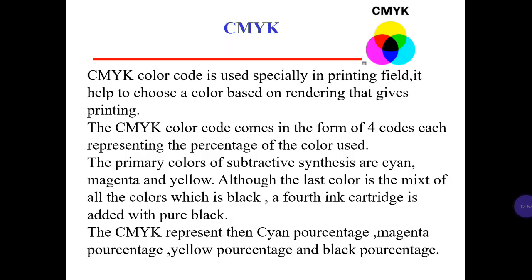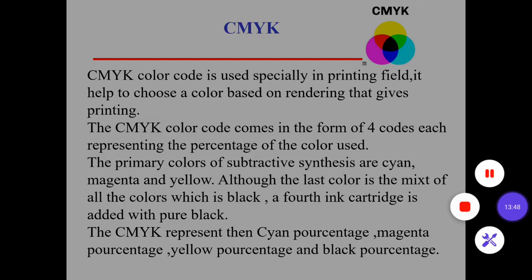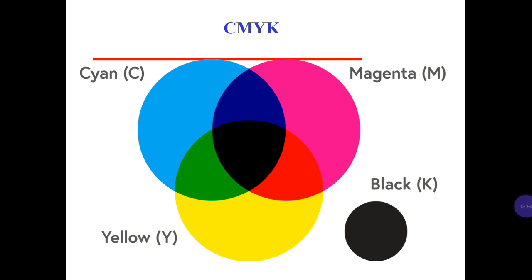CMYK. CMYK color code is used specifically in printing files. It helps to choose a color based on the rendering that printing gives. The CMYK color code comes in the form of four codes, each representing the percentage of the color used. The primary colors of subtractive synthesis are cyan, magenta, and yellow. The last color is the mix of all the colors, which is black. A fourth ink cartridge is added with pure black. CMYK represents: cyan (C), magenta (M), yellow (Y), and black (K).